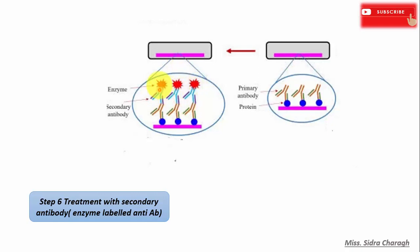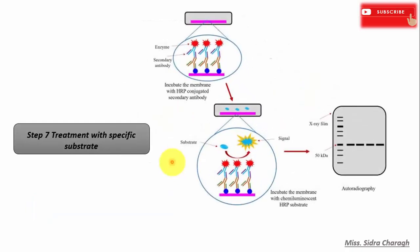The next step is treatment with secondary antibody. The secondary antibody is enzyme-labeled — for example, alkaline phosphatase or horseradish peroxidase — and is an antibody against the primary antibody, so it can bind with the antigen-antibody complex. After treatment with secondary antibody, we treat it with a suitable substrate. To visualize the enzyme action, the reaction mixture is incubated with a specific substrate. The enzyme converts the substrate to give a visible color product, and the colored band can be visualized on the membrane.